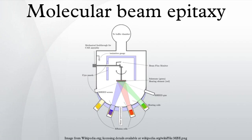During operation, reflection high-energy electron diffraction is often used for monitoring the growth of the crystal layers. A computer controls shutters in front of each furnace, allowing precise control of the thickness of each layer, down to a single layer of atoms. Intricate structures of layers of different materials may be fabricated this way.